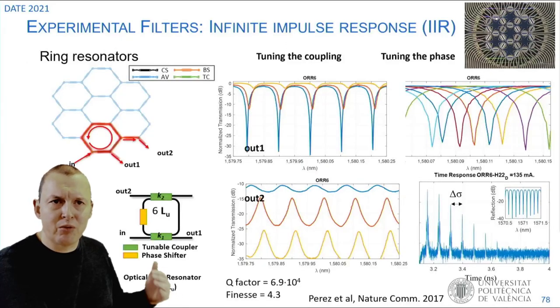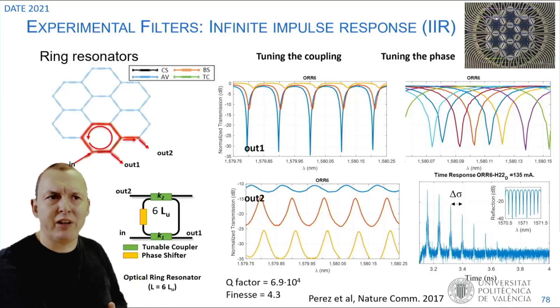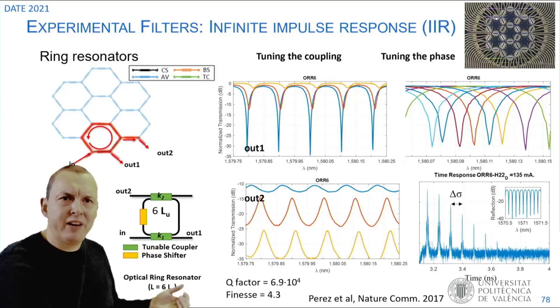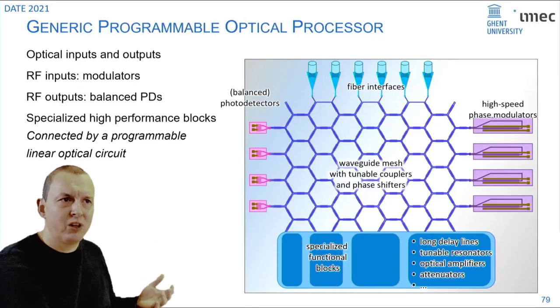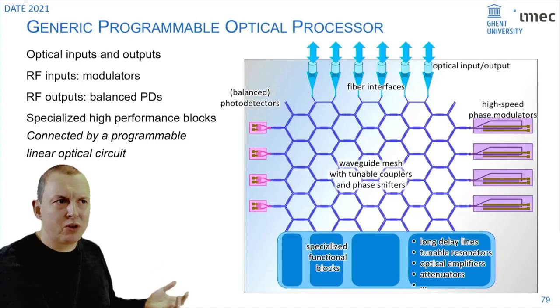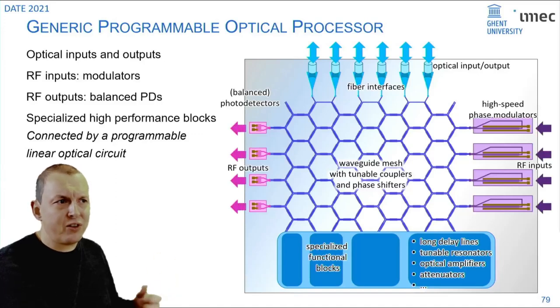If you combine now such a hexagonal mesh with additional functionality, you can come to what we thought you could call a general programmable optical processor, which has input and output ports for fibers, but also uses modulators to transfer electrical signals in high-speed RF signals and photo detectors to output high-speed electrical signals.